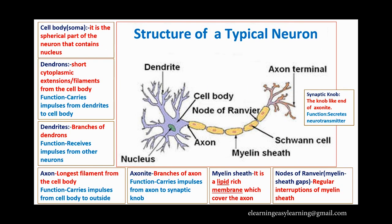Now we can see the structure of a typical neuron. A neuron is an animal cell and at the same time it is a special type of cell. A specialized cell means a cell that is performing functions beyond those of a normal cell. Since a neuron performs special functions, we call it a specialized cell.